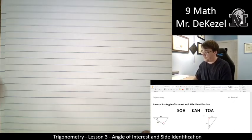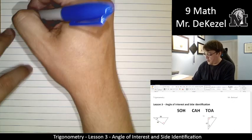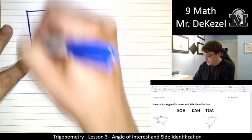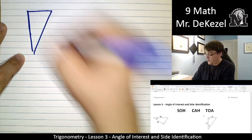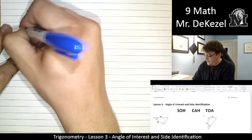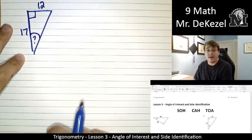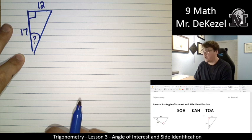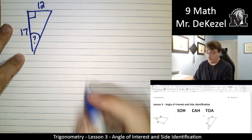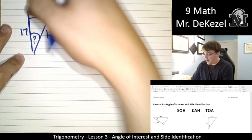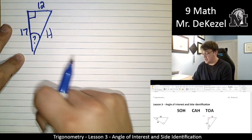Let's do the next one. We have a triangle that looks like this. It's our right angle here. 17, 12, and our angle of interest at the bottom. We can go ahead and label the hypotenuse right away. It's right across from the right angle. It's the longest side. It's right there.